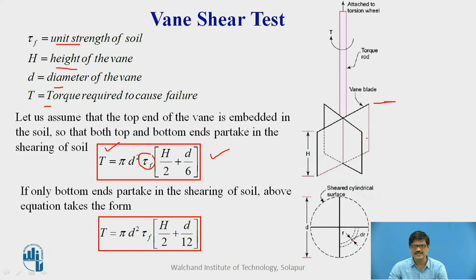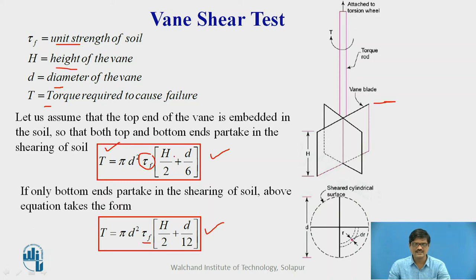The torque required to cause failure can be determined in the laboratory by performing the test. Depending on whether only one part or both surfaces take part in shearing, we use the appropriate equation. If only the bottom part takes part in shearing — meaning the top surface is above the soil mass — then the equation for torque changes: the difference is that instead of d/6, you use d/12. Knowing the T value, we can find the shear strength of the soil directly from this equation. We are unable to find individual strength parameters — only the shear strength directly.